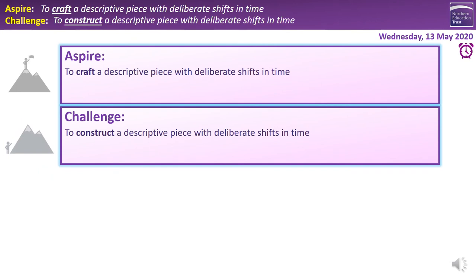In this session we're going to put together all the learning we've been doing over the past couple of weeks to write a piece of description. Our learning intentions are to construct a descriptive piece with deliberate shifts in time — not just moving chronologically but looking at flashbacks and flash forwards. To aspire, you're going to craft a descriptive piece, and remember 'craft' means care, carefulness, passion — more like an art form than a paint-by-numbers piece of description. That's the difference between constructing and crafting.